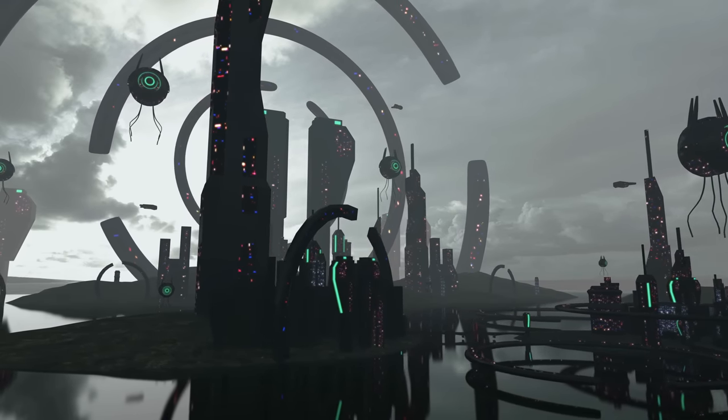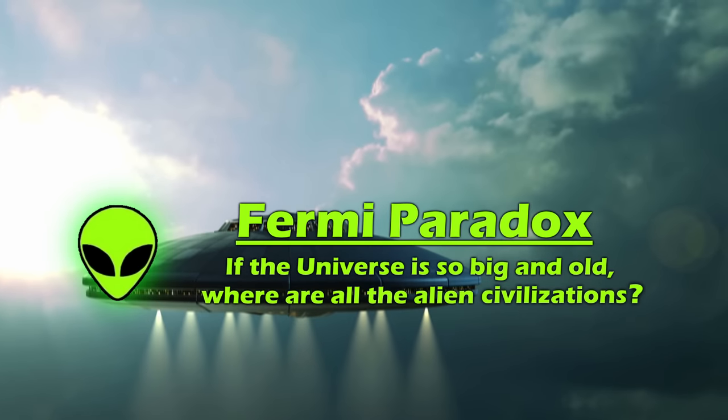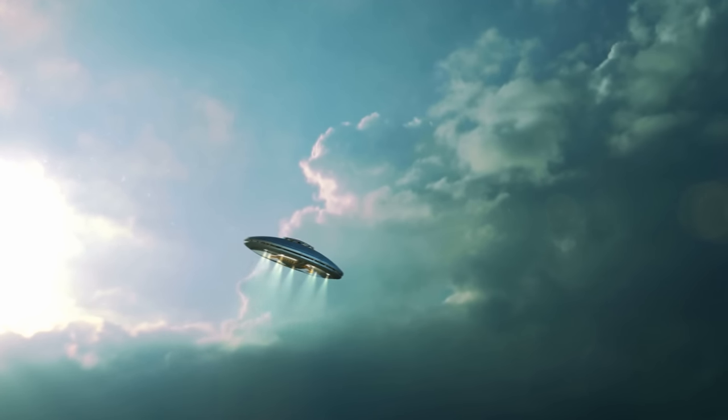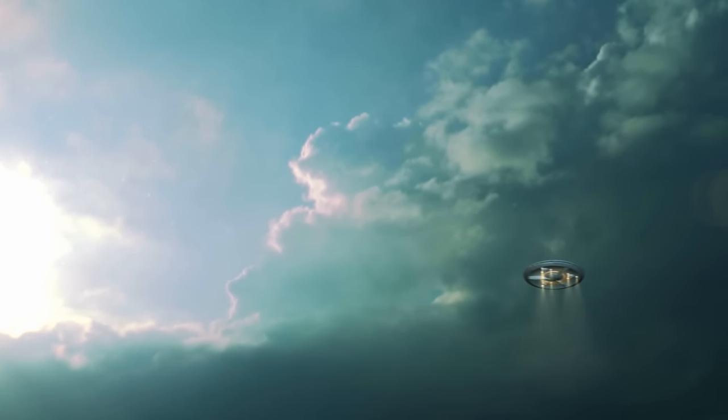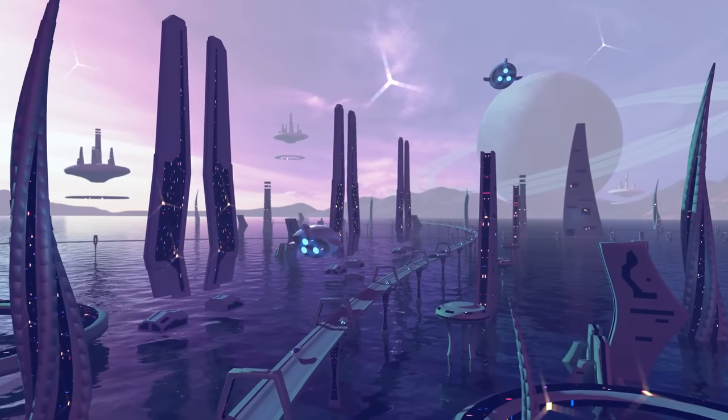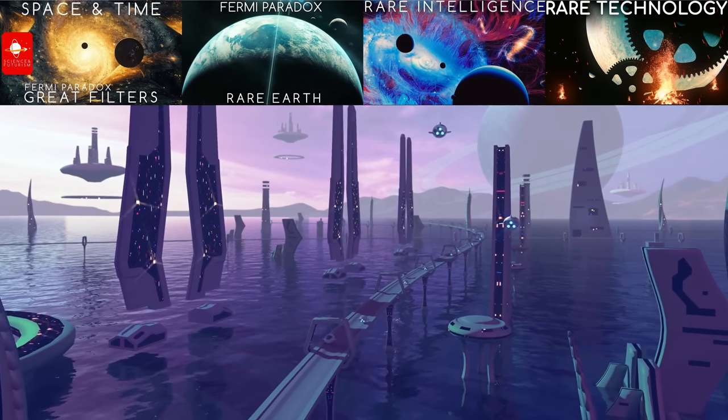When it comes to the Fermi Paradox, and the big question of where all the intelligent alien life is, we have discussed many different scenarios, and the three big ones are that they hang out here all the time but we're just blind or in denial, that they are very common but we just have problems seeing or hearing them, and that intelligent life is just very rare, because the so-called Great Filters prevent lifeforms from making it through.